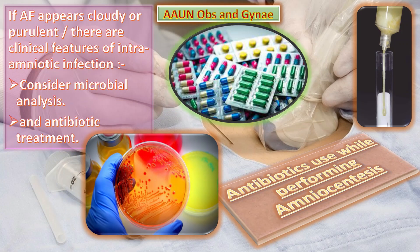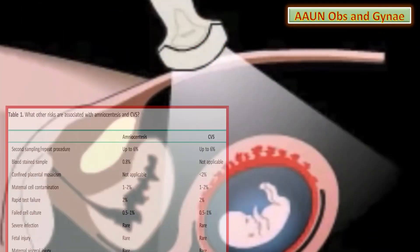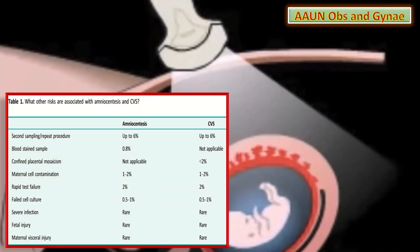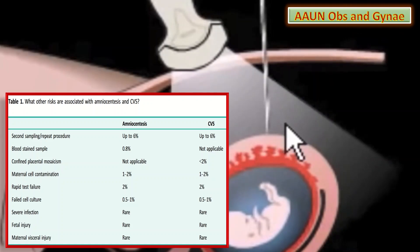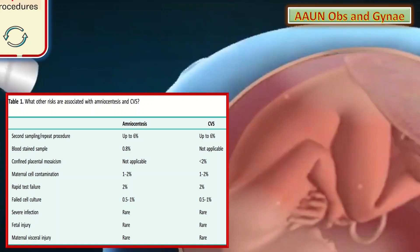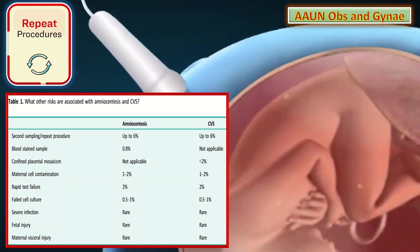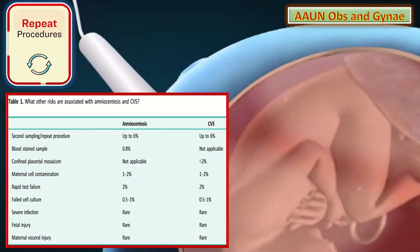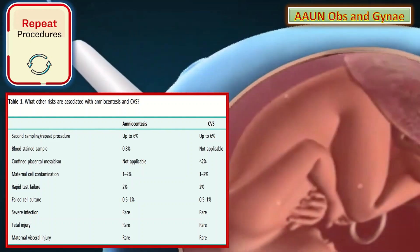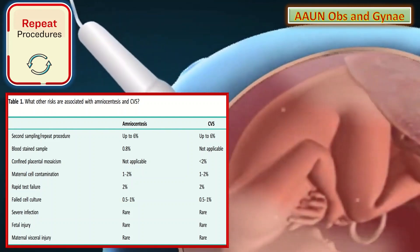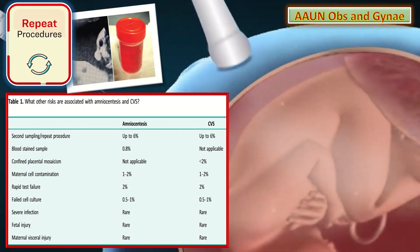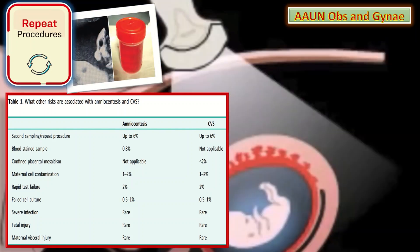This is a very important table from the RCOG guideline about CVS and amniocentesis, showing other associated risks. The first risk is about second sampling or repeat procedure — up to 6% in amniocentesis and also up to 6% with chorionic villus sampling. Next is the blood-stained sample: 0.8% with amniocentesis and not applicable to CVS.